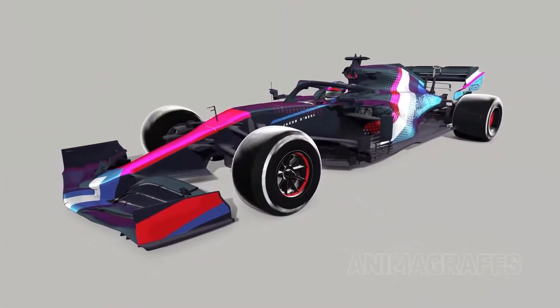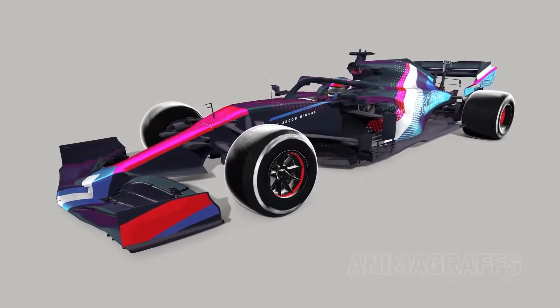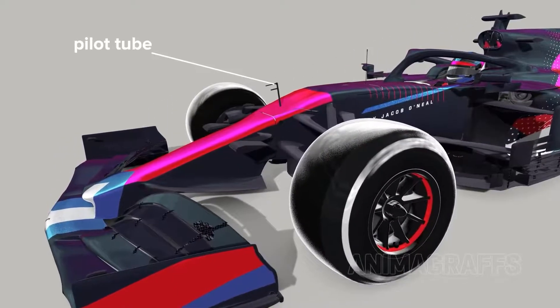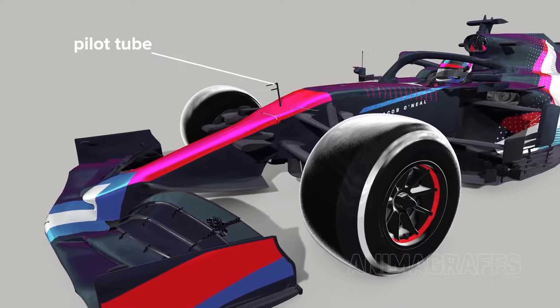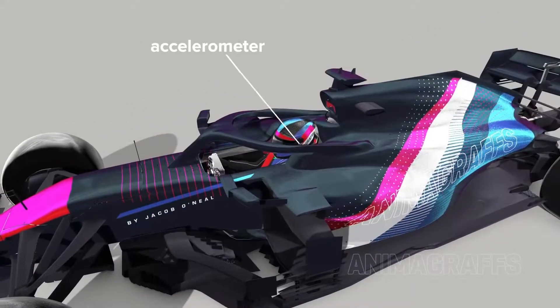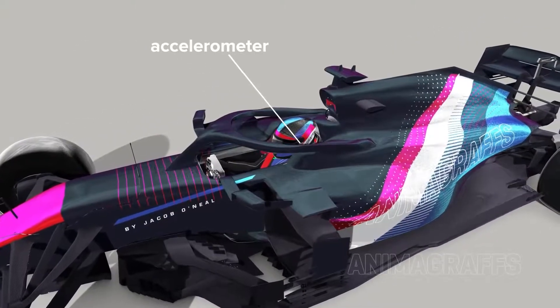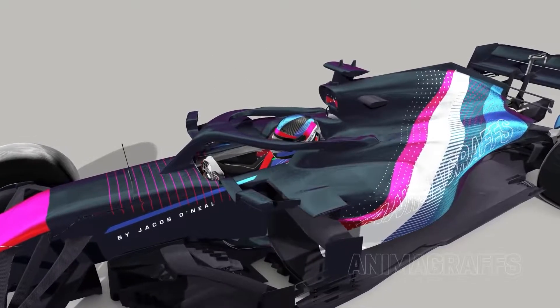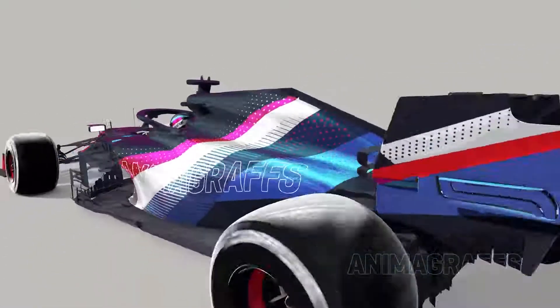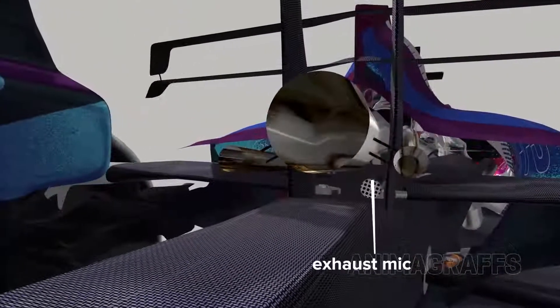There are sensors all over these cars. For example, a pitot tube at the front measures airspeed. The driver's custom molded earplugs have an accelerometer to track head movement. There's a microphone at the rear to pick up exhaust sound.